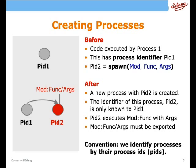What's the effect of a Spawn? Looking at the diagram, before the Spawn we have a single process running. After calling Spawn, we have a second process which runs the code in module mod, function func, with the supplied arguments. The return value of that Spawn is the PID for the new process. So the only knowledge about the new process is contained within the process with PID1. The function must also be exported from the module in order to be spawned.